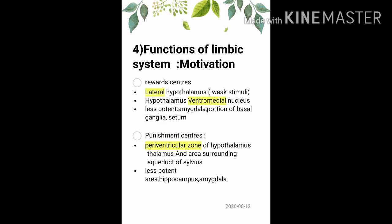For motivational physiology, remember the reward and punishment centers. For reward centers: the lateral hypothalamus with weak stimuli acts as a reward center, as does the ventromedial nucleus of the hypothalamus. Less potent reward areas include the amygdala, portion of basal ganglia, and septum area. Punishment centers include the periventricular zone of the thalamus and hypothalamus, and the area surrounding the aqueduct of Sylvius in the midbrain. Less potent punishment areas are the hippocampus and amygdala.